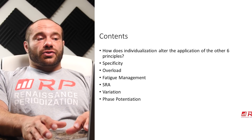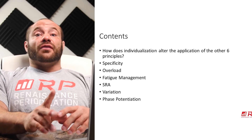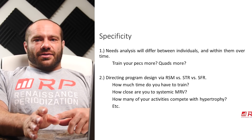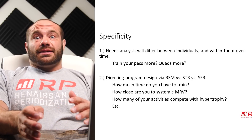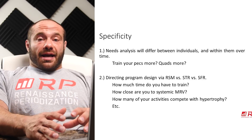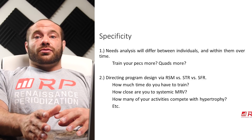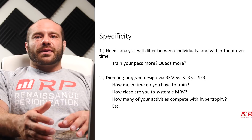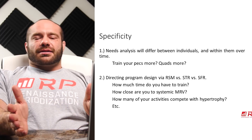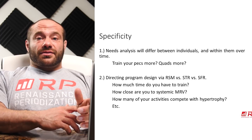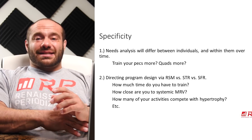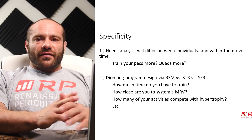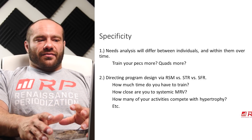How does individualization alter the application of specificity? First is the needs analysis, which is the core of specificity, and it's going to be very different between individuals. Over time, should a person train their pecs more? Should they train their quads more? Do they want their arms bigger or their calves smaller? It's a thing that is going to be different between individuals like crazy. Specificity is very, very altered in that way by individualization.